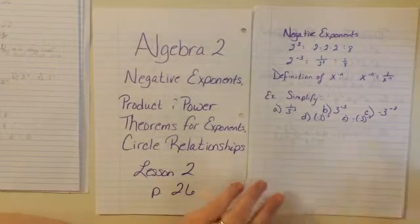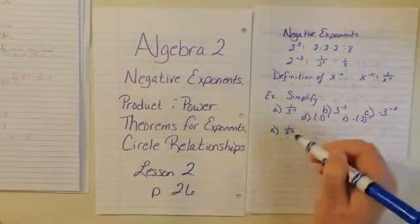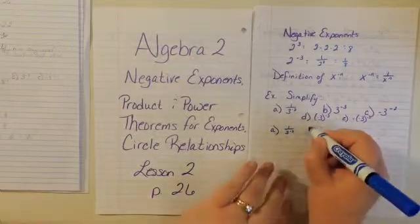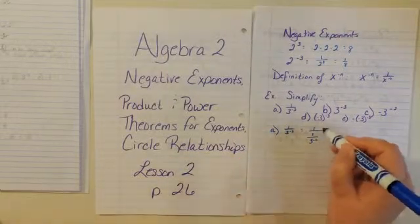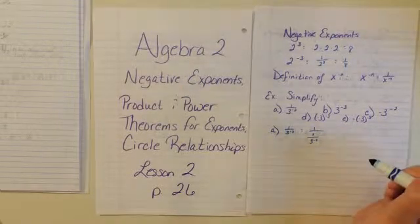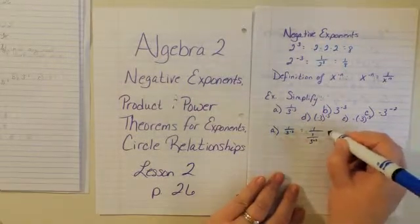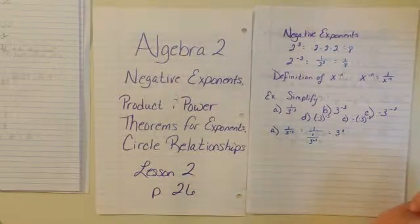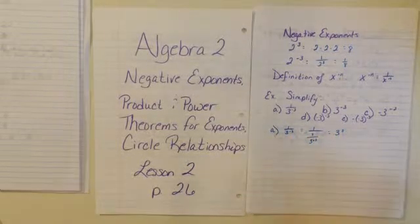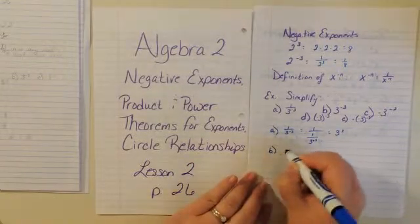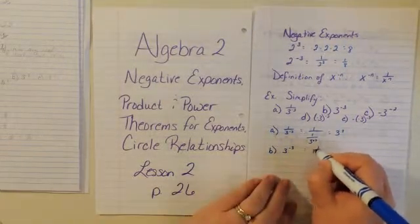Let's try simplifying these. First, we have 1 over 3 to the negative 2. 3 to the negative 2 means we're going to flip that — this is the same as 1 divided by 1 third. This is now positive, which means we just flip this, so this equals 3 squared. If there's a negative in the bottom, we just push it up to the top. For B, 3 to the negative 3 — the negative flips this to the bottom: 1 over 3 cubed.